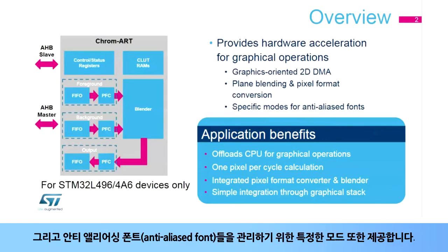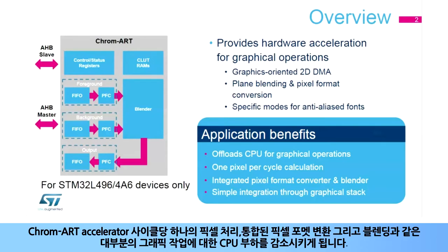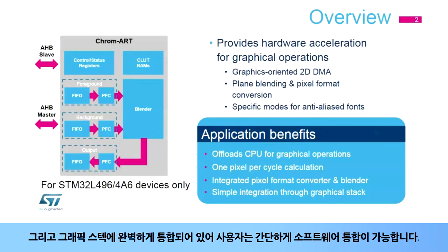It also provides specific modes for managing anti-aliased fonts. The Chroma Art Accelerator will offload the CPU for most graphical operations with a 1 pixel per cycle throughput, integrated pixel format conversion, and blending. The Chroma Art Accelerator is fully integrated in graphical stacks, making its software integration transparent to the user. Note that this Chroma Art Accelerator is only available for STM32L496-4A6 devices.